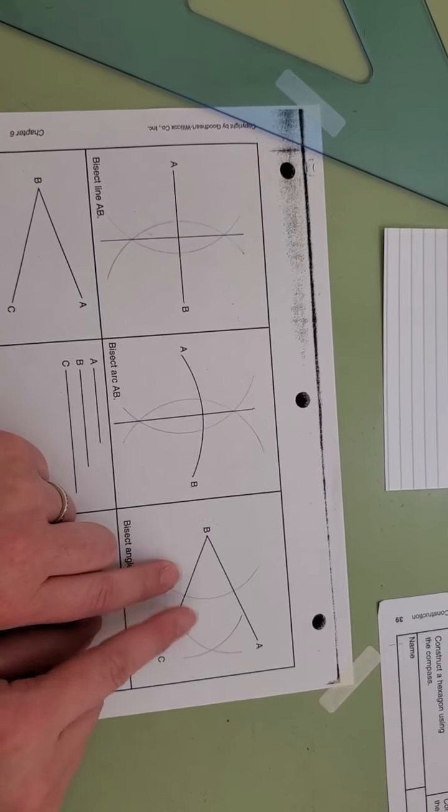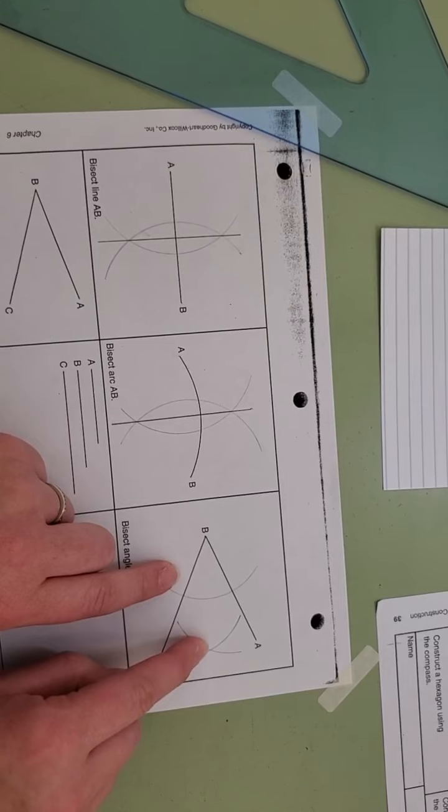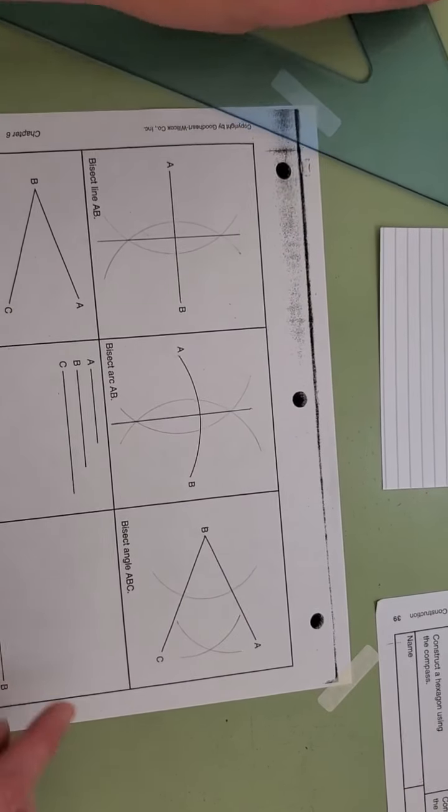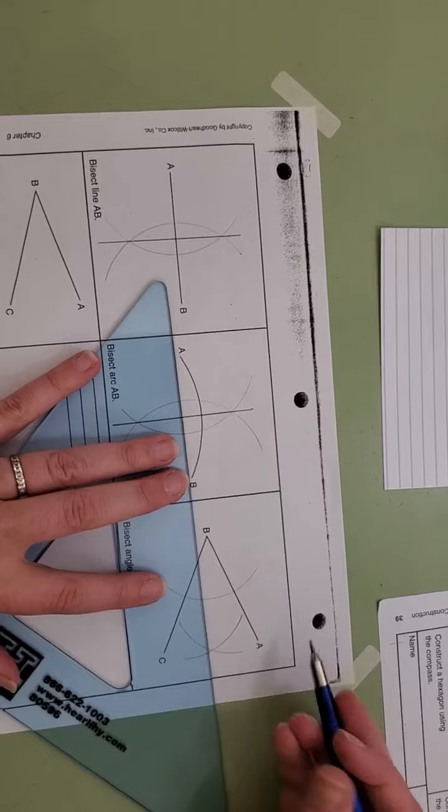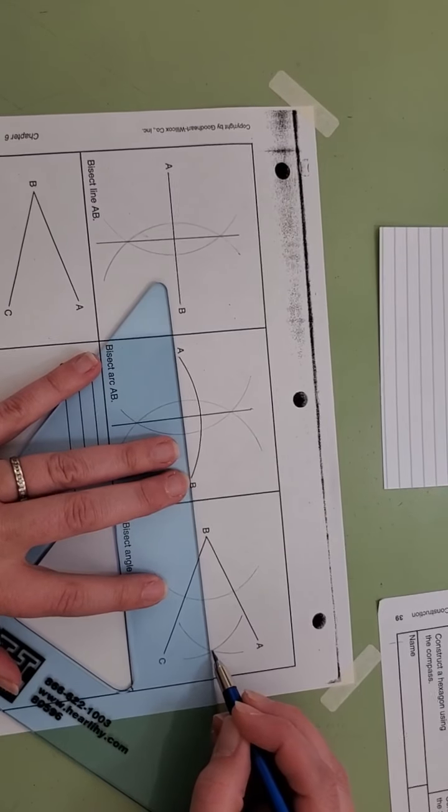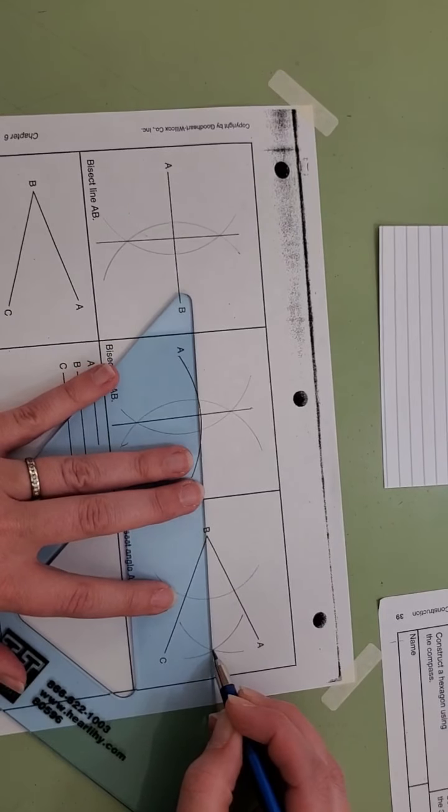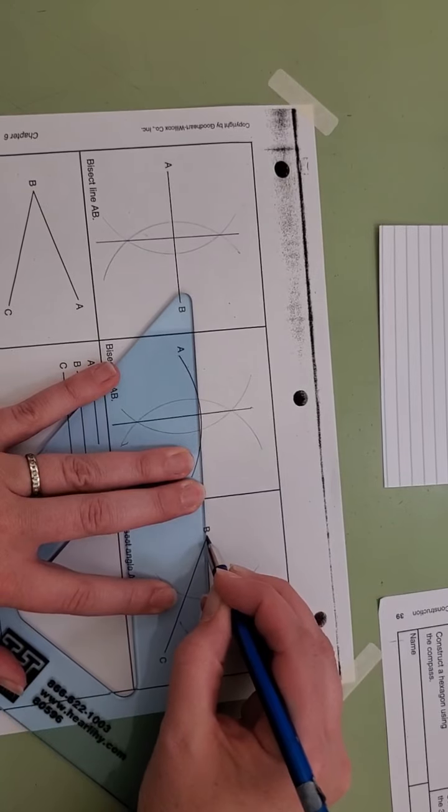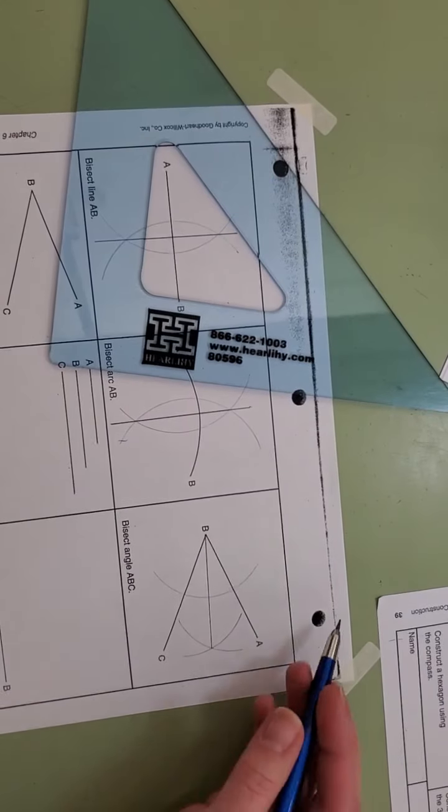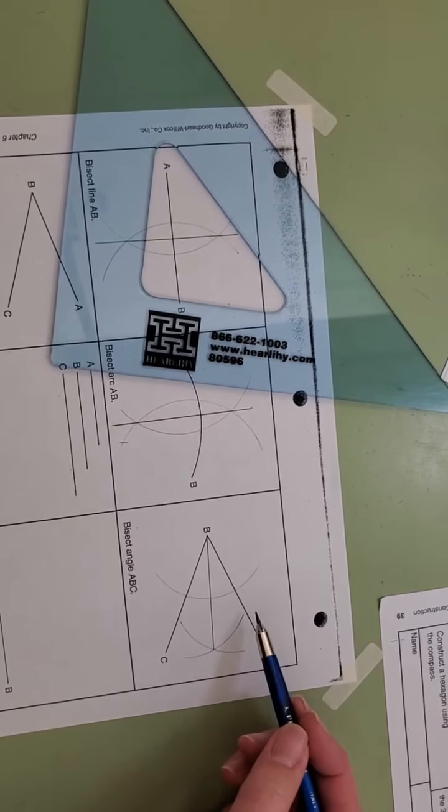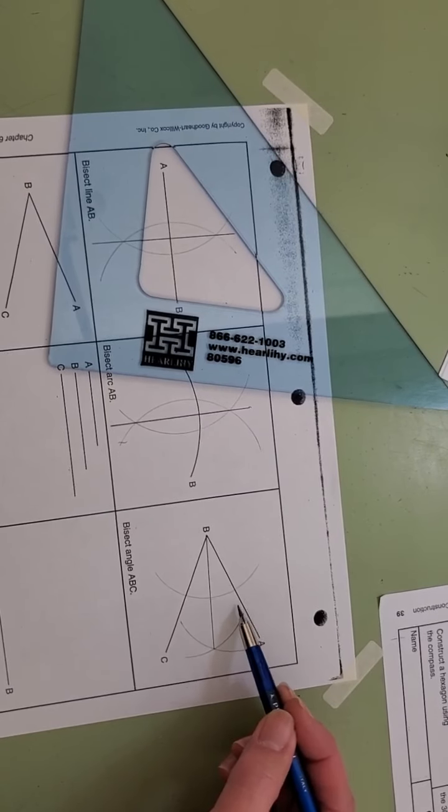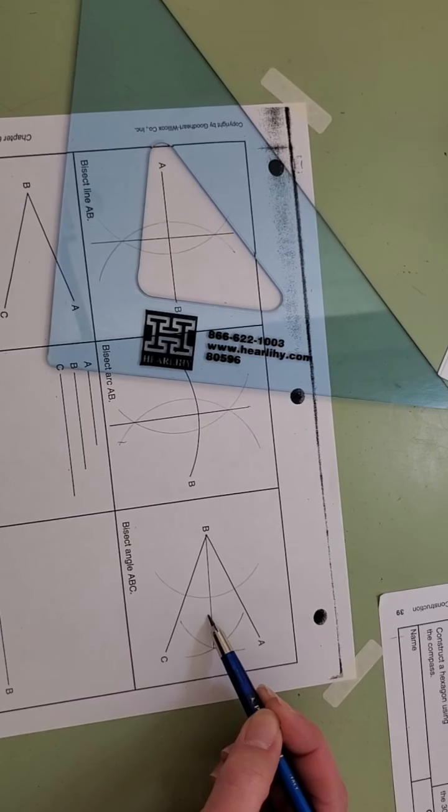Now that I have all of those lines there, I have this intersection and this intersection. Those two dots are the areas that I am going to connect with a line. If you use your protractor, you'll be able to measure and see that this angle is exactly the same as this angle.